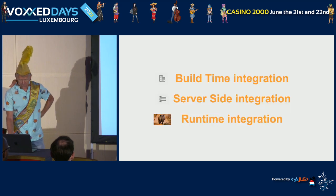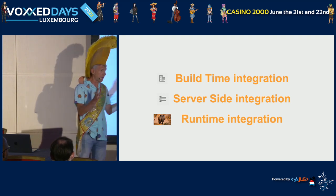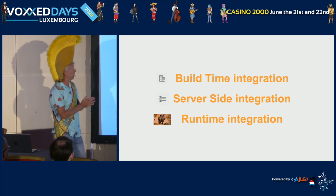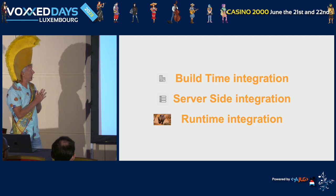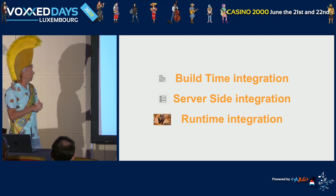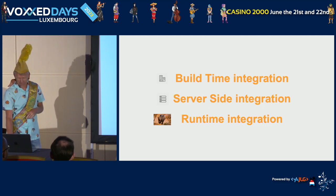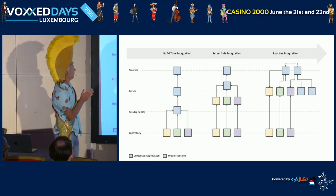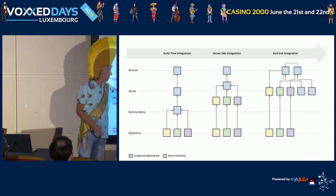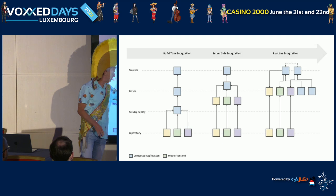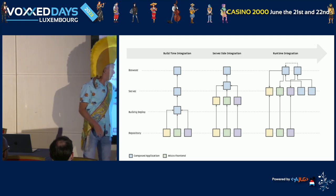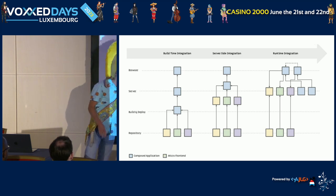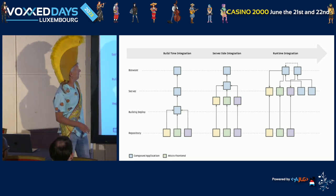When we want to integrate our micro frontends together into one single user-facing application, we can bundle them at build time, at server-side, or at runtime. With build-time integration, each micro frontend is an NPM package on its own. We publish those NPM packages and bundle them together via a package.json — a simple way to do build-time integration.